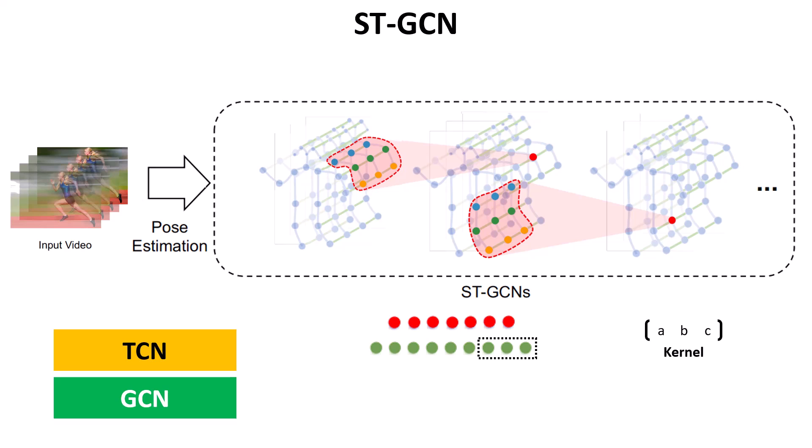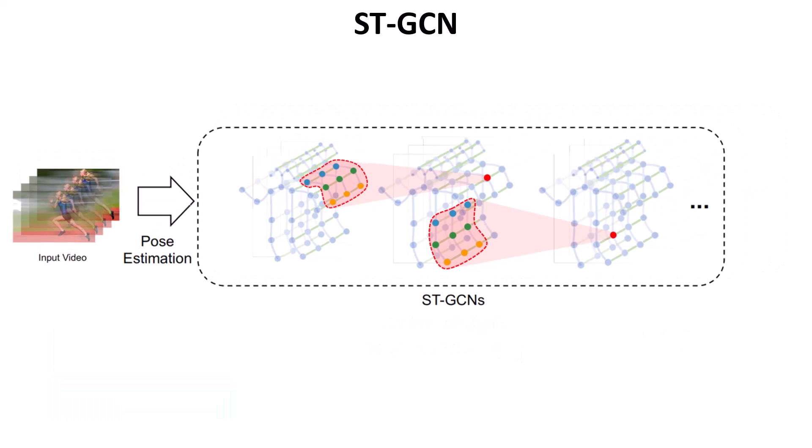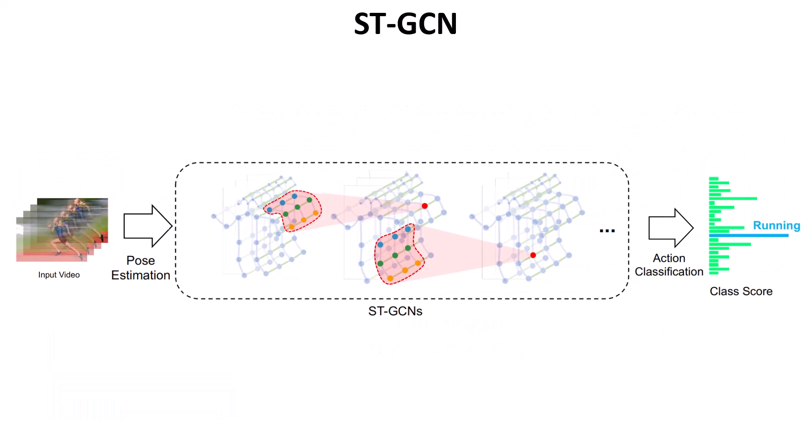Once we have these rich spatiotemporal representations, we apply global average pooling to reduce the dimensionality of the feature vector and then apply action classification on that output vector to recognize what action is occurring — for example, running. Of course, when we do average pooling over all temporal information, we lose some information in between, which is an active area of research where better alternatives to simple averaging have been proposed.